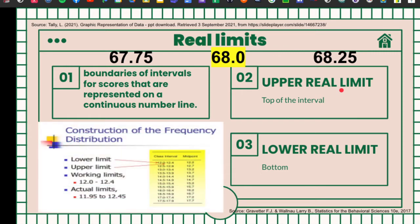Let's take a look on the construction of the frequency distribution. So the lower limit is 67.75 and the upper limit is 68.25. How about the real limit? The real limit here is 68.0, because the real limit separates two adjacent scores and is located exactly halfway between the scores. So if we're going to subtract 68.0 from 67.75, the answer will be 0.25. 68.0 subtracted by 68.25, it's negative 0.25.